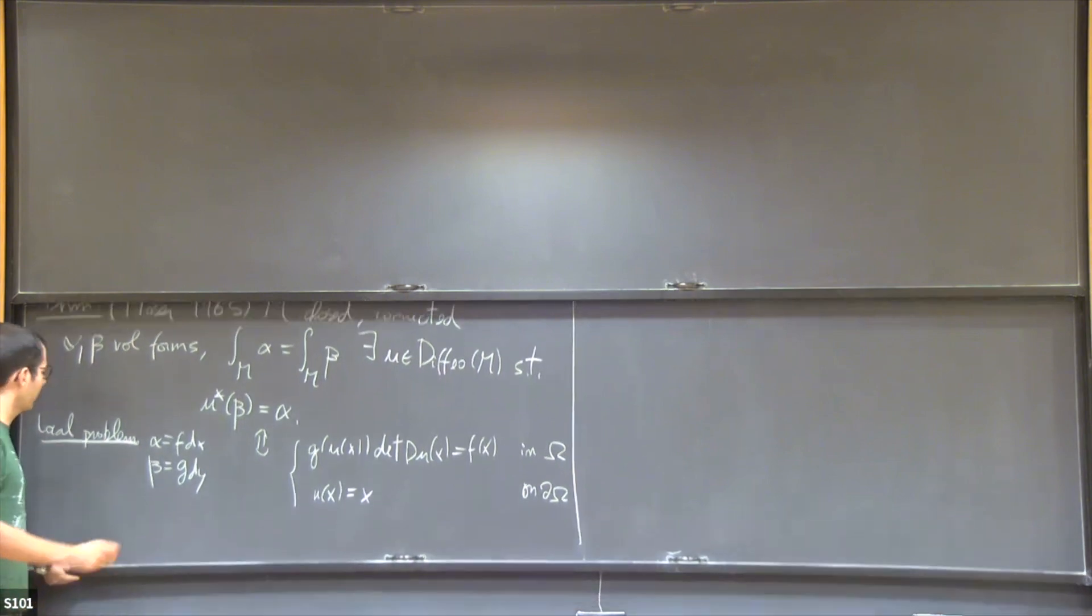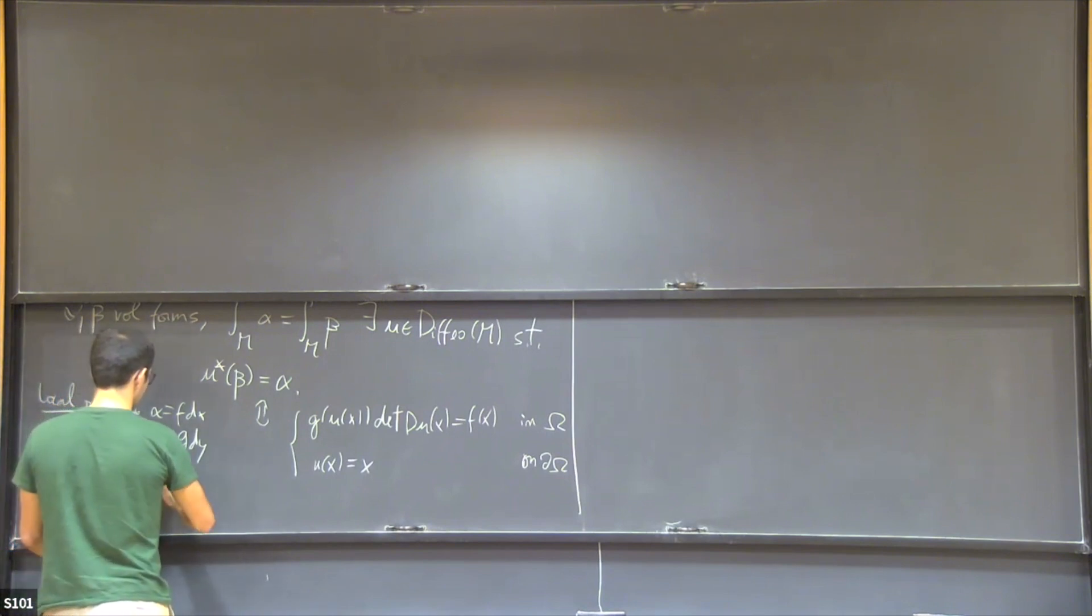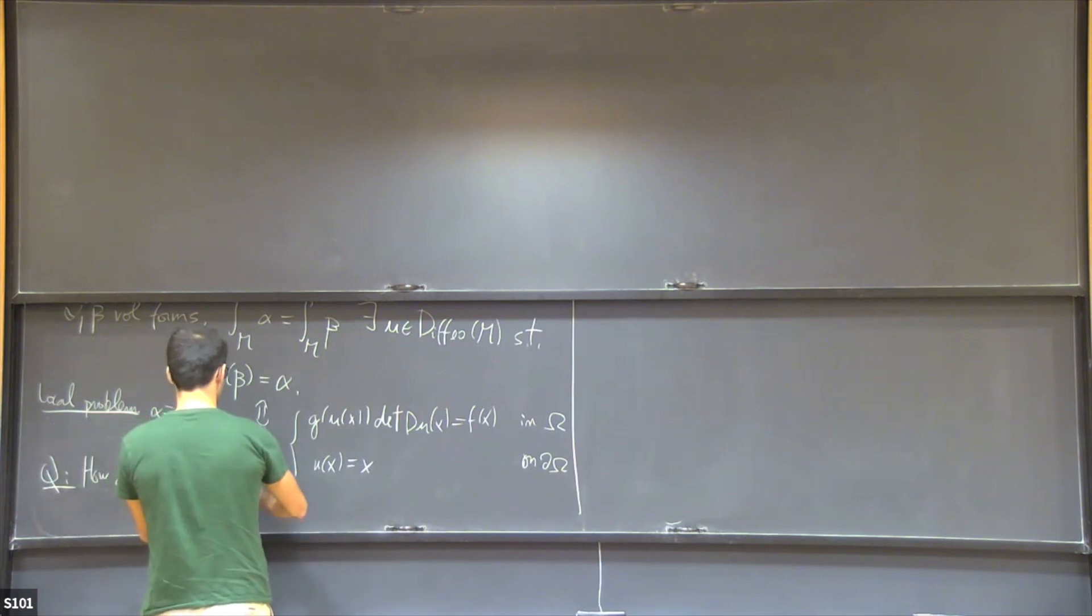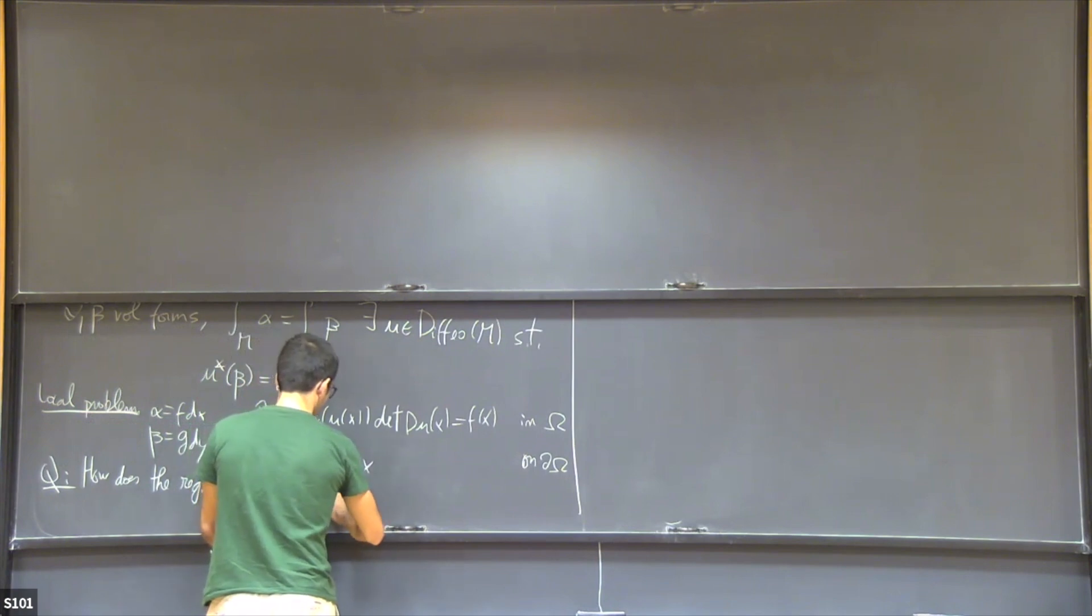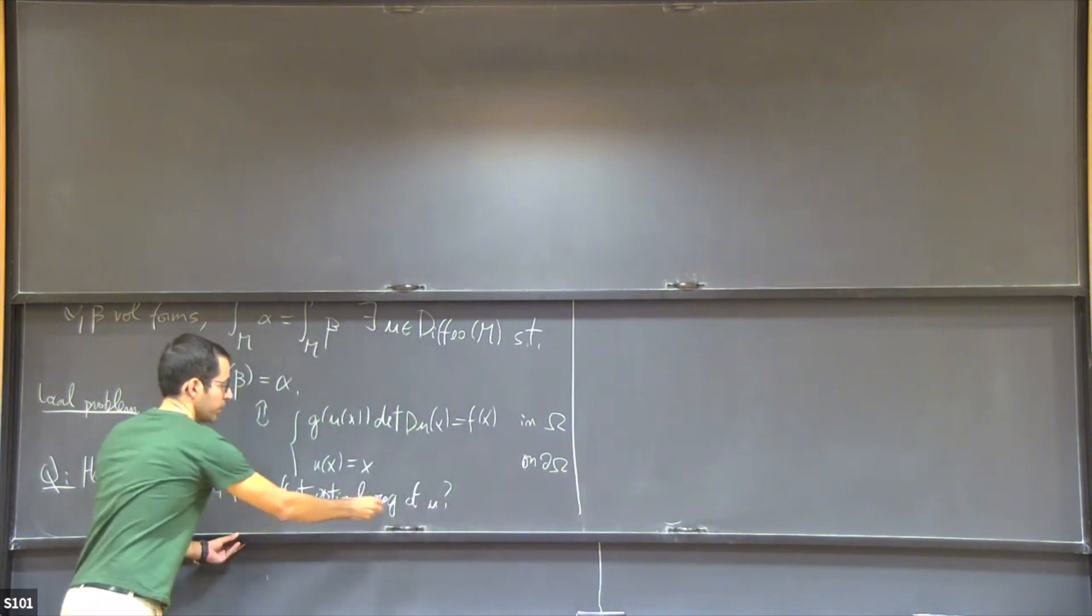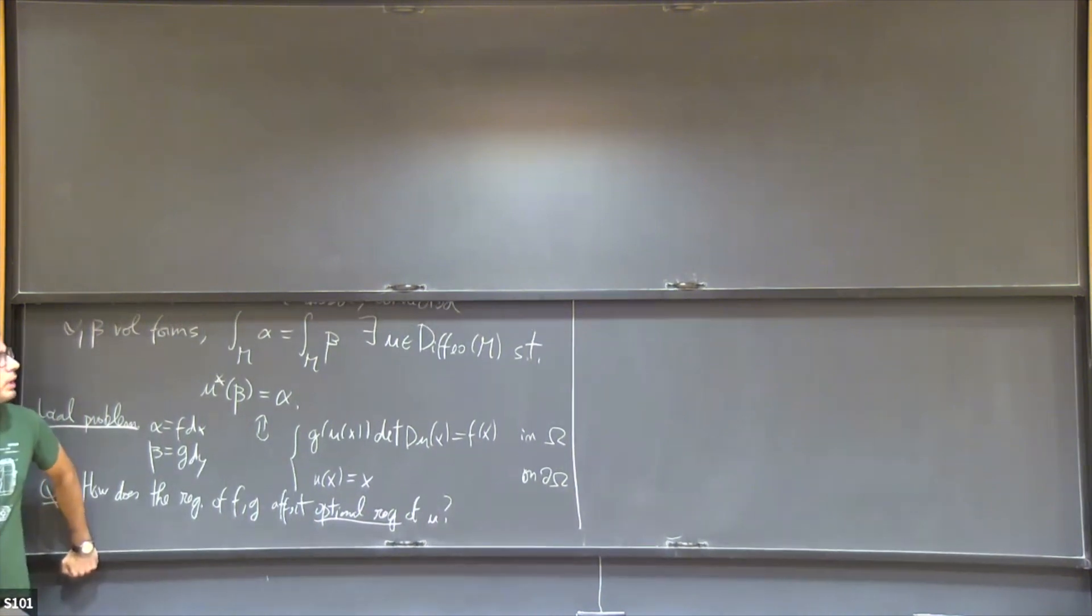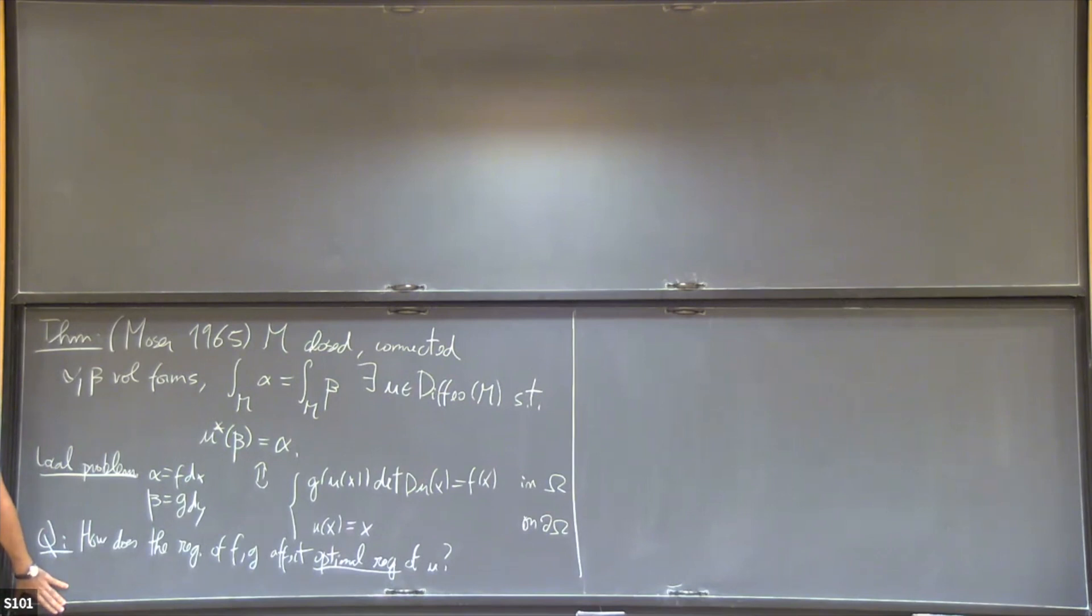As an analyst, the question that I'm interested in here is the following: how does the regularity of f and g affect the optimal regularity of U? I emphasize here optimal because, as there are many solutions, I want to find a solution which is optimal.